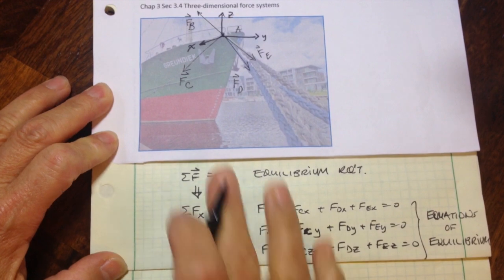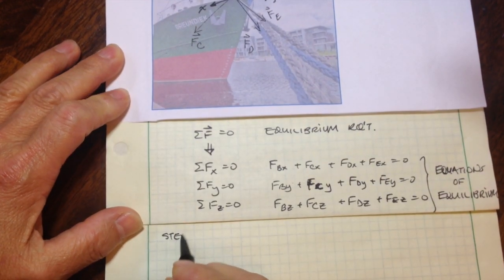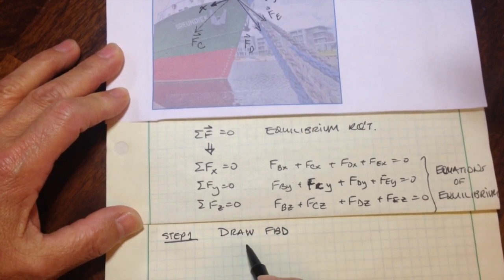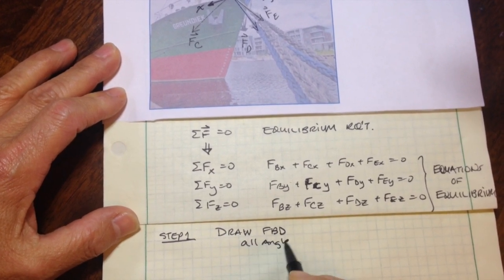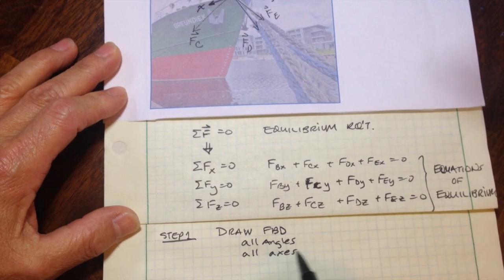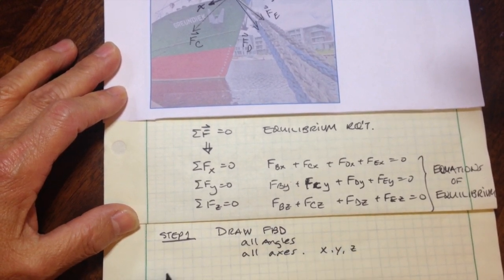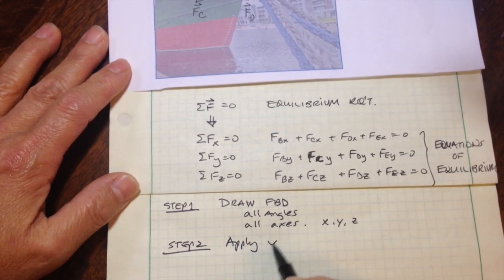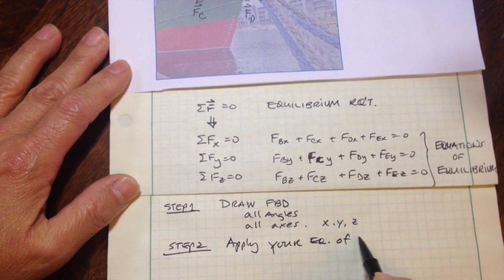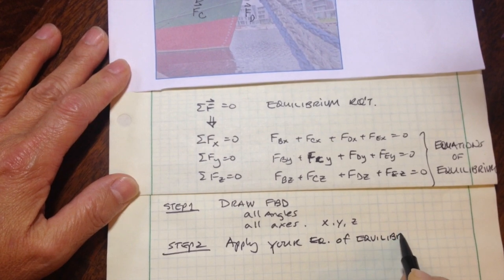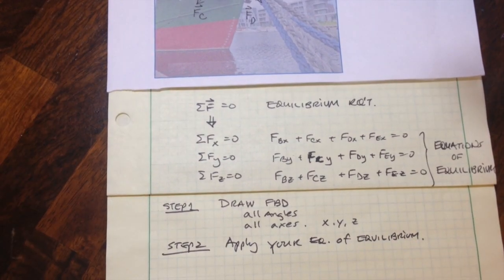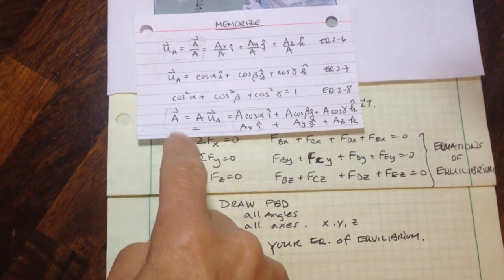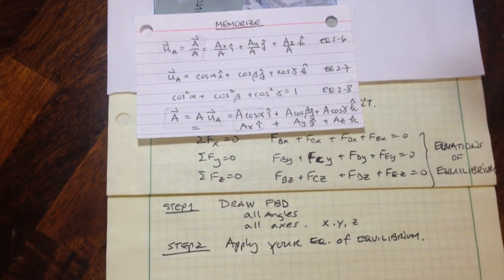These are called the equations of equilibrium. When solving 3D force systems, the very first step is to draw the free body diagram. With that said, you should specify all angles and you should specify all axes — your X, Y, and Z. After that, apply your equations of equilibrium. In order to find some of these components, it will be required to apply some equations that we've covered in the past, as well as these.